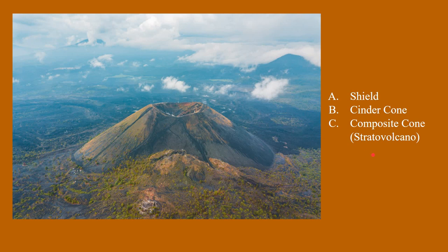We're going to do a quick quiz on different types of volcanoes — take a moment to guess each one before I give the answer. This first volcano is a cinder cone, specifically Paracutan volcano in Mexico. Cinder cones are generally formed by one or a very short series of eruptions, then go fairly dormant. They are fairly common in rift valleys, and the rocks are generally intermediate in composition.